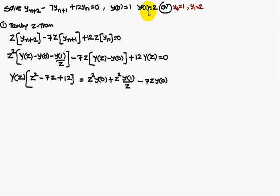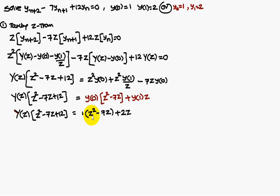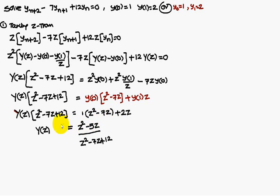We have Y(0) equal to 1 and Y(1) equal to 2. Y(0) equals 1 means Z²·Y(0) becomes Z². Y(1) equals 2 means Z²/Z · 2 becomes 2Z. And 7Z · Y(0) equals 7Z, so minus 7Z. Combining: Z² plus 2Z minus 7Z equals Z² minus 5Z. Therefore Y(Z) is equal to (Z² minus 5Z) by (Z² minus 7Z plus 12).